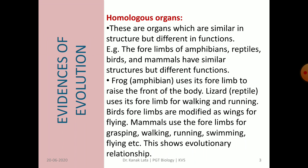Homologous organs are the organs which are similar in structure but different in functions. For example, the forelimbs of amphibians, reptiles, birds, and mammals have similar anatomical structures but different functions.